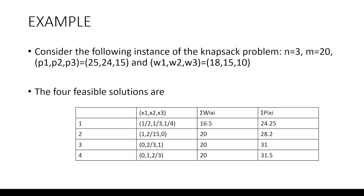There can be various feasible solutions with respect to the given constraint. Here are four feasible solutions. The first takes 1/2 of object 1, 1/3 of object 2, and 1/4 of object 3, giving a total weight of 16.5 and a profit of 24.25. The second feasible solution takes the complete object 1 and 2/15 of object 2, with a total weight of 20 and a profit of 28.2.